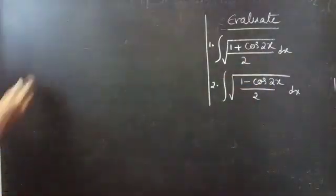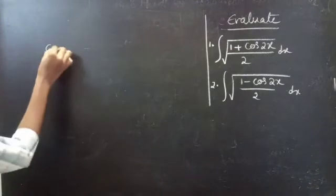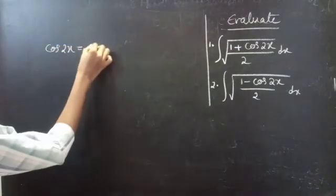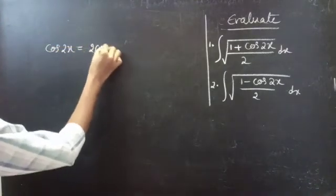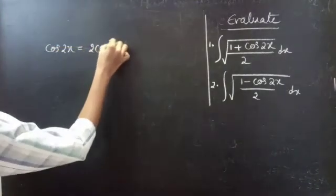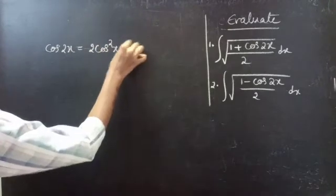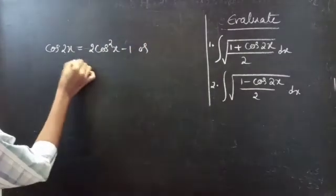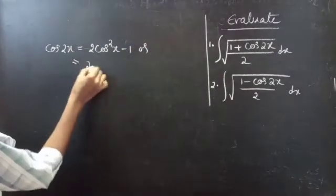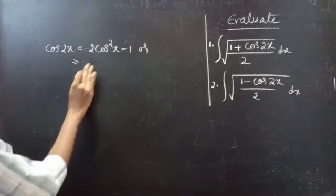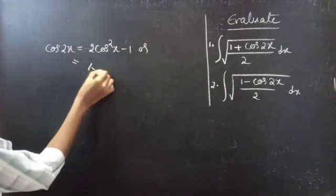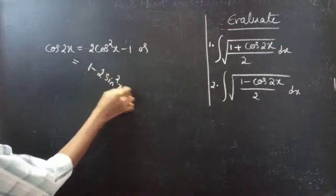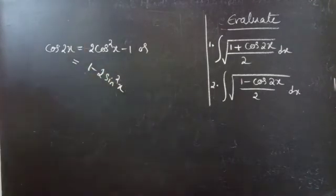We know that cos 2x equals 2cos²x minus 1, or this equals 1 minus 2sin²x.